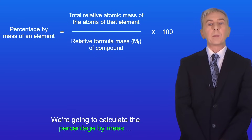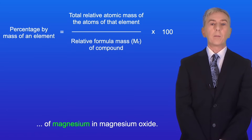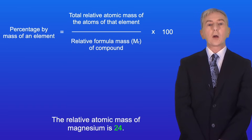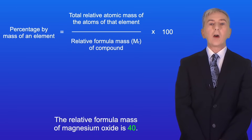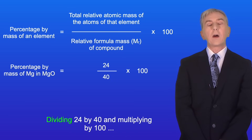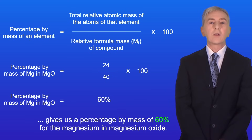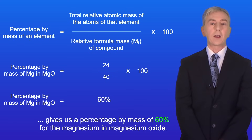We're going to calculate the percentage by mass of magnesium in magnesium oxide. We have one atom of magnesium and the relative atomic mass of magnesium is 24. The relative formula mass of magnesium oxide is 40. Dividing 24 by 40 and multiplying by 100 gives us a percentage by mass of 60% for the magnesium in magnesium oxide.